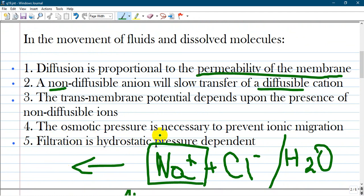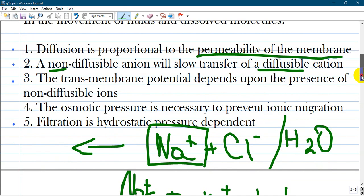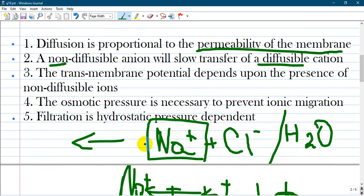The osmotic pressure is necessary to prevent ionic migration. It's not correct that ions mean not only sodium but also chloride, magnesium, potassium, calcium, and many others. Osmotic pressure is not obligatory or necessary for preventing all ionic migration. It is false.